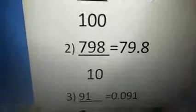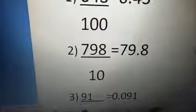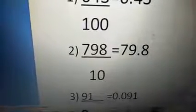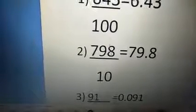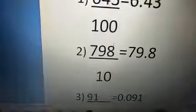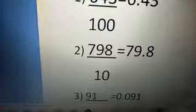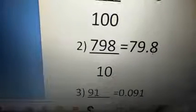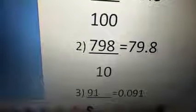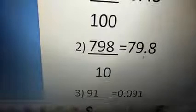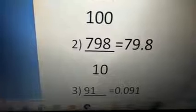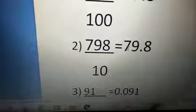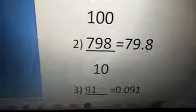Second problem: 798 divided by 10. So 10 has only 1 zero. After 1 digit, I need to place the decimal. So I take 1 digit, after I place the decimal point. Before the decimal point, we have 2 digits — so leave it. Our answer is 79.8.